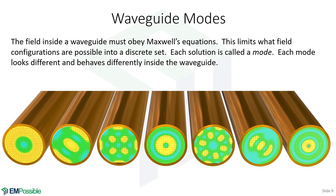There's this concept of modes in waveguides. The electromagnetic fields have to follow rules — they have to obey Maxwell's equations. In the context of a waveguide, this means the electric and magnetic fields can't take on any configuration they want in the cross section. Instead, there are only discrete ways the electromagnetic fields can configure themselves. Each discrete configuration is called a mode. Here we're looking at modes that would occur in a metallic circular or cylindrical waveguide.